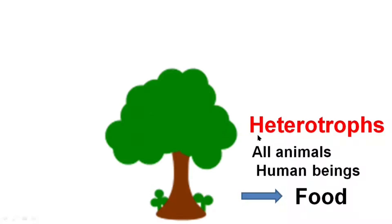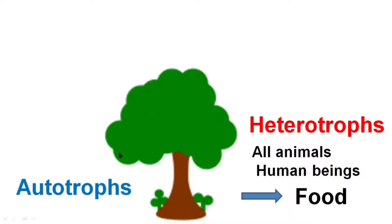But what about plants? When they require energy, they also need macromolecules and different substances to obtain energy. But the difference between animals and plants is that plants can synthesize their own food. That is why they are known as autotrophs — auto means same or self.